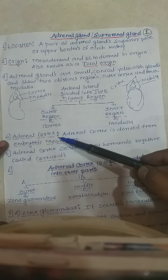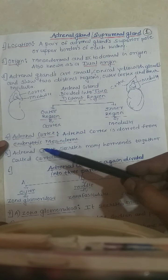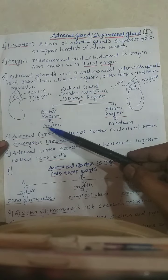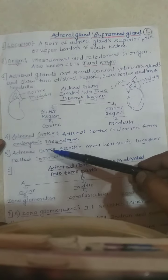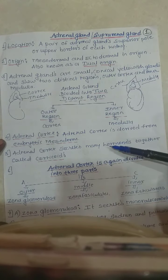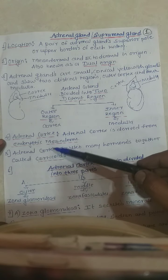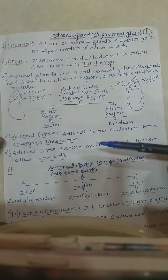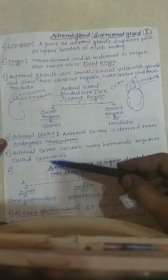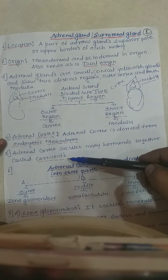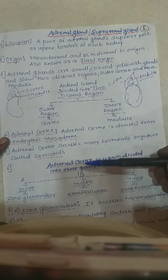The adrenal cortex is derived from the embryonic mesoderm. The adrenal cortex secretes many hormones together called corticoids. These corticoids act on several activities of the human body.